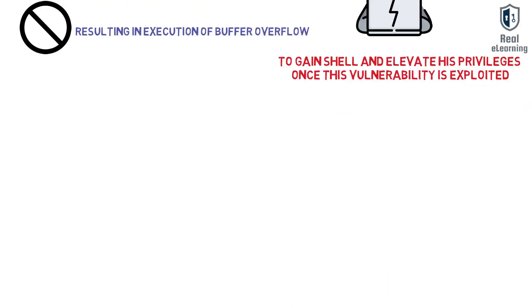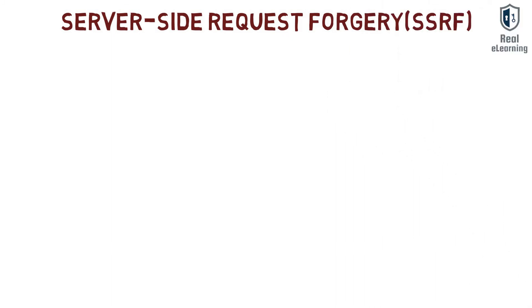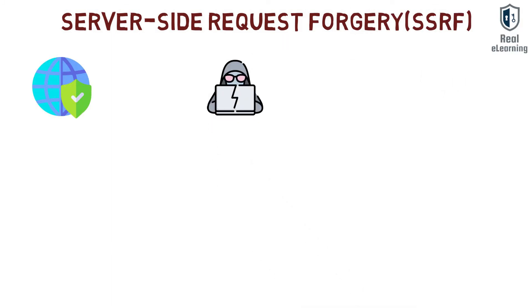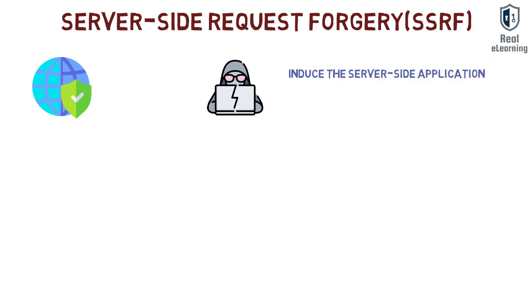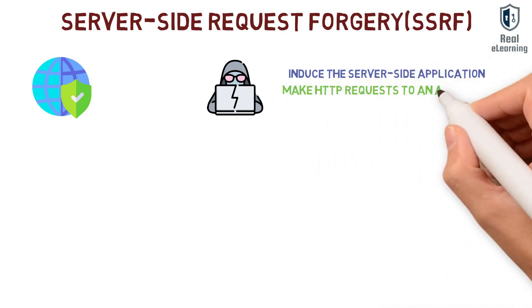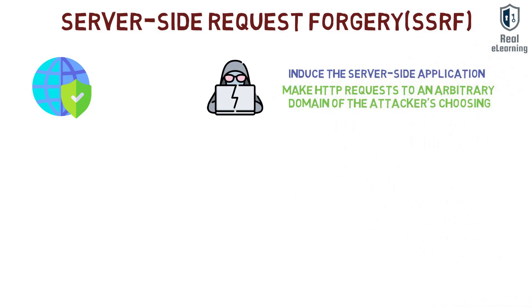Server-side request forgery, or SSRF, is a web security vulnerability that allows an attacker to induce the server-side application to make HTTP requests to an arbitrary domain of the attacker's choosing.